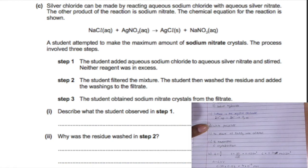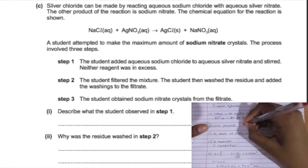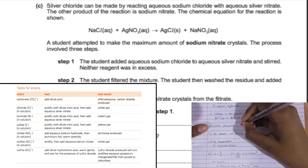For part C, we're talking about making sodium nitrate. In the first step, the student adds aqueous sodium chloride to aqueous silver nitrate and stirs, and neither reagent was in excess.